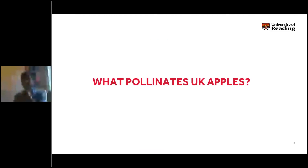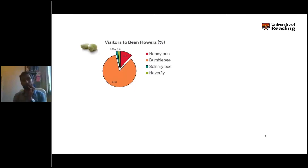We know that insect pollinators are important for apple production — insects are required to bring viable pollen to apple flowers for those flowers to set fruit and achieve a marketable yield. But there are still a number of outstanding questions, which we've been trying to address through several projects looking at pollination in UK apples. One of the first questions was: which insects are actually out there pollinating UK apples at the moment?